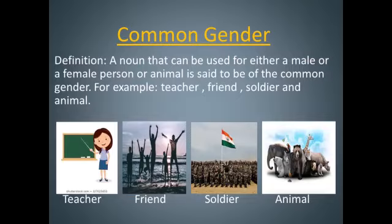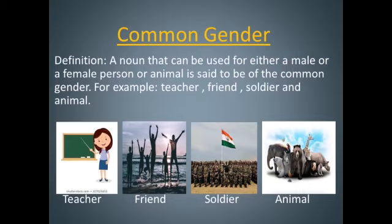Common gender: a noun that can be used for either a male or a female person or animal is said to be of the common gender. For example: teacher, friend, soldier, animal. These names are common for both male, female, as well as for animals.